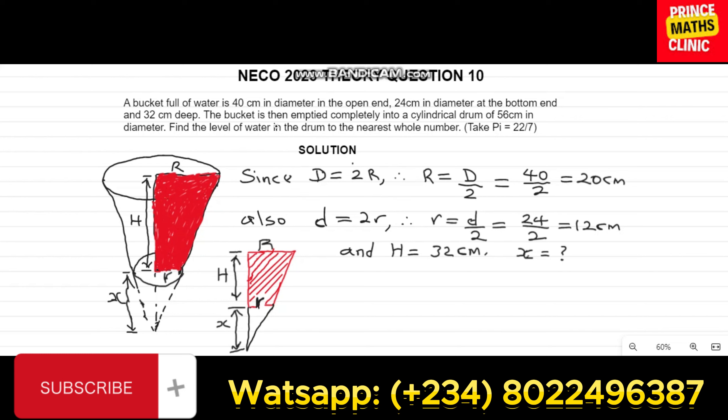The question says the bucket is then emptied completely into a cylindrical drum. That means later on in the question, we are going to compare the volume of a frustum and that of a cylinder. Then we are going to find the level of water in the drum to the nearest whole number. Now, the height here, the level of the water here refers to the height of the cylinder. So let's look at the key points that we need to analyze here.